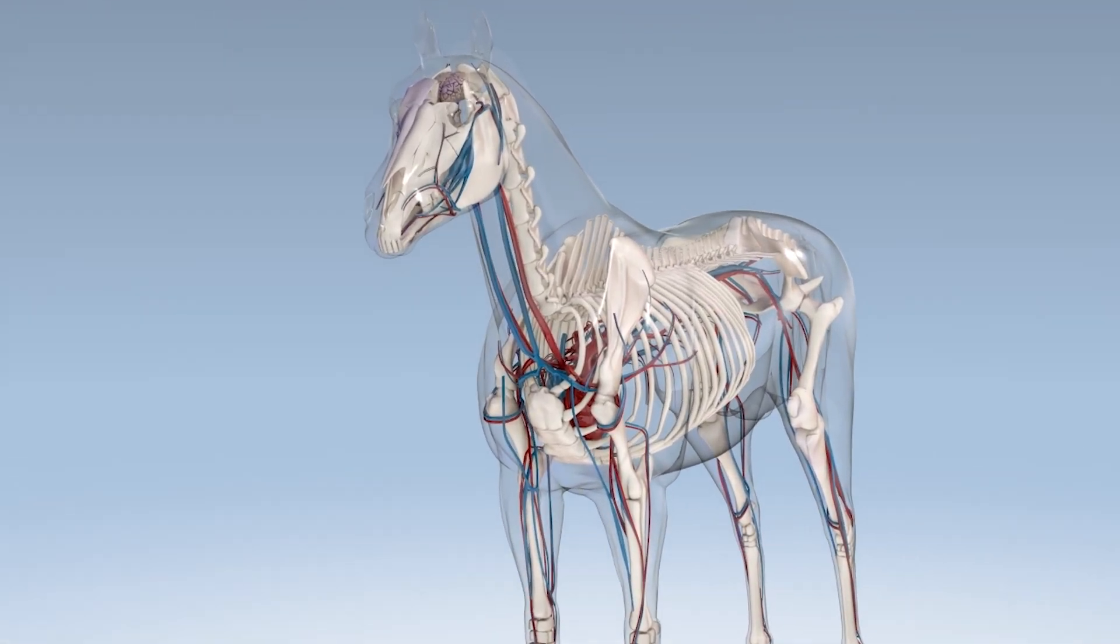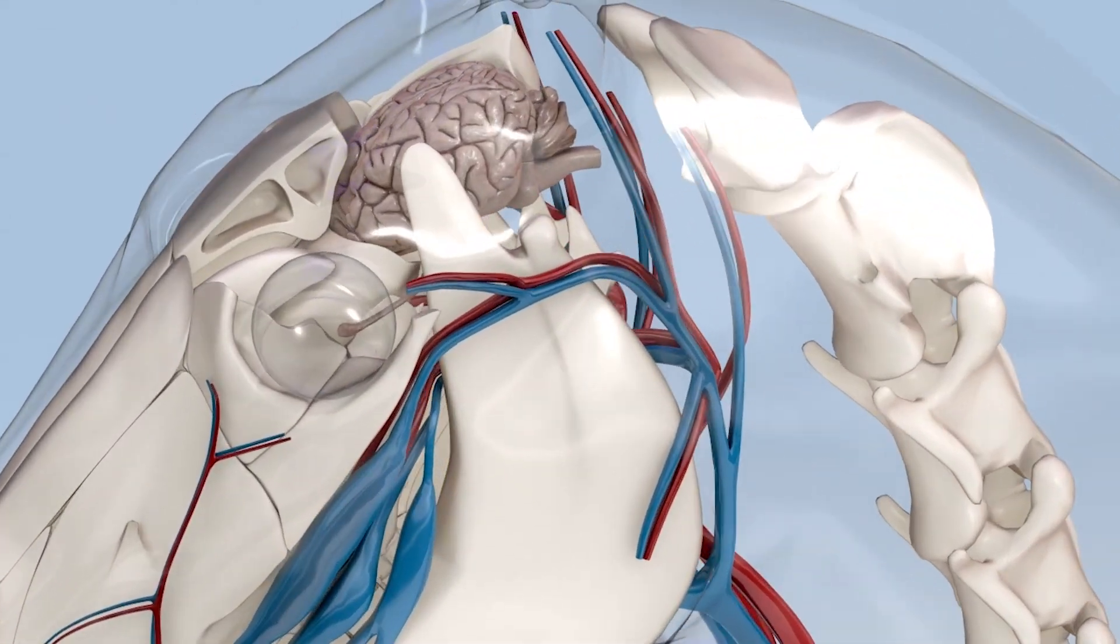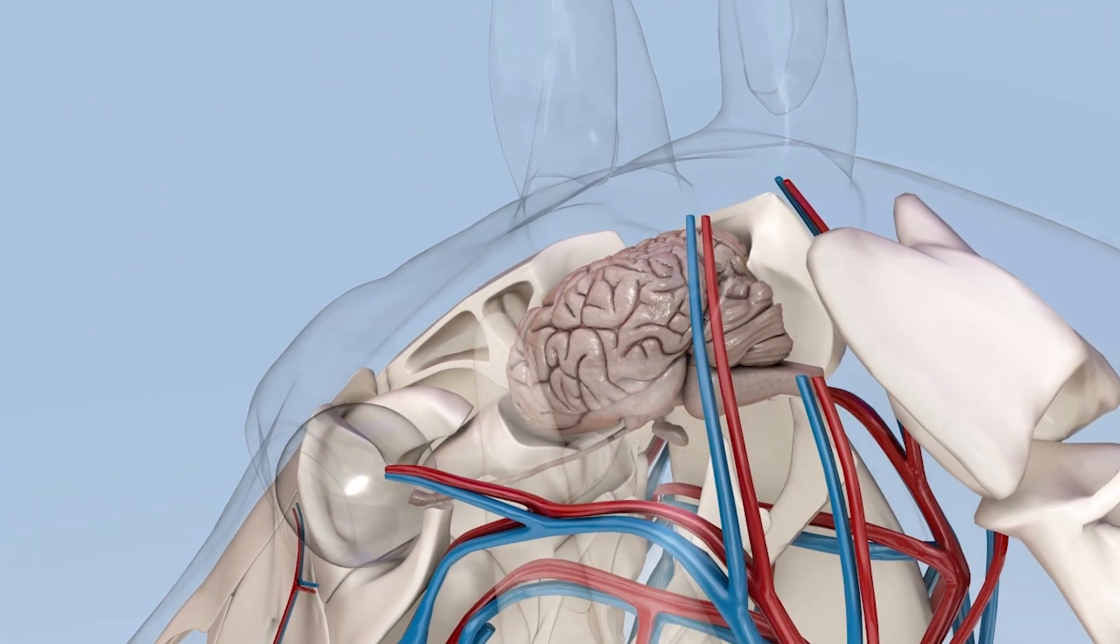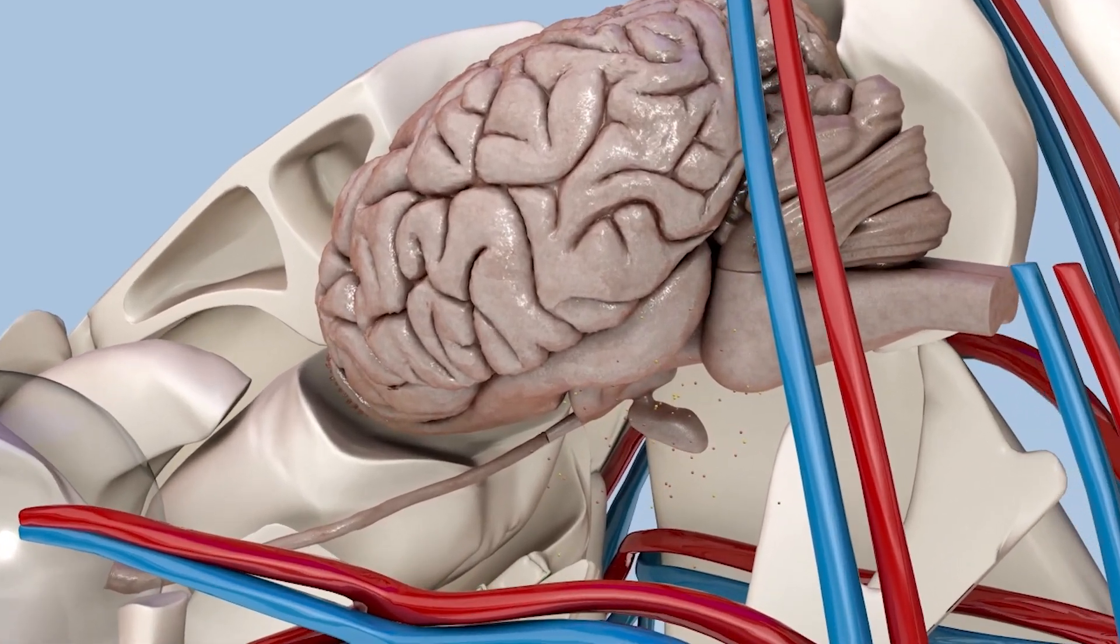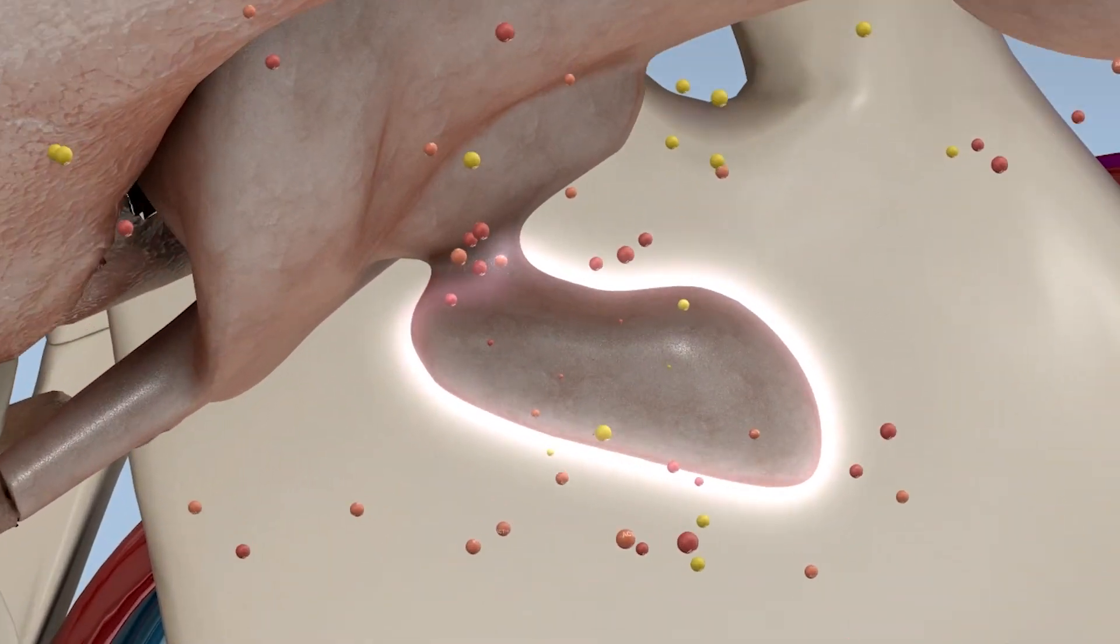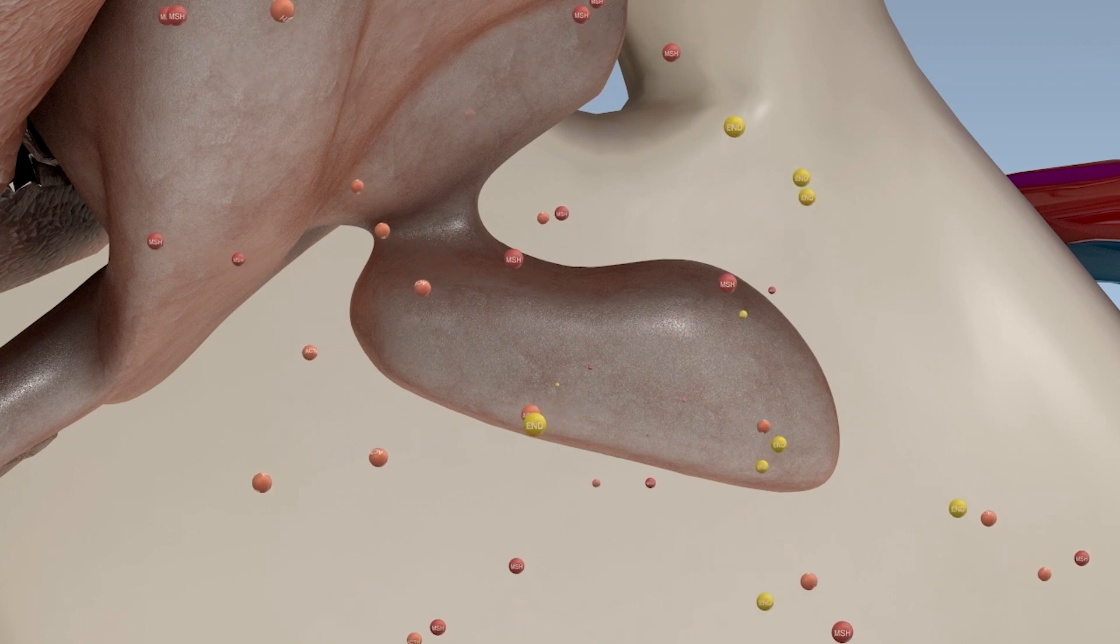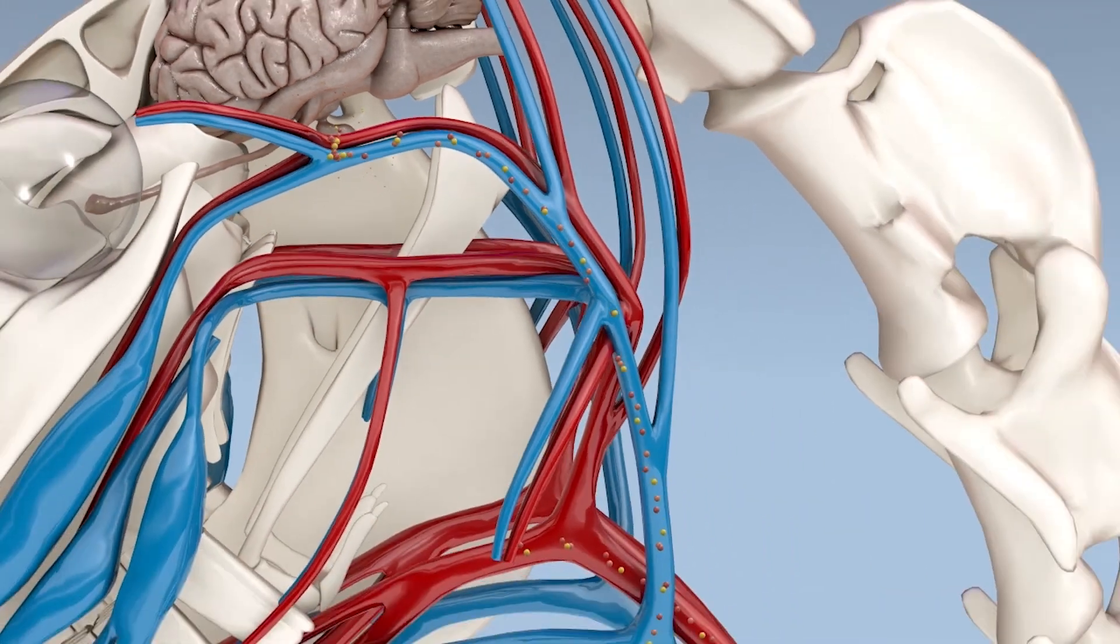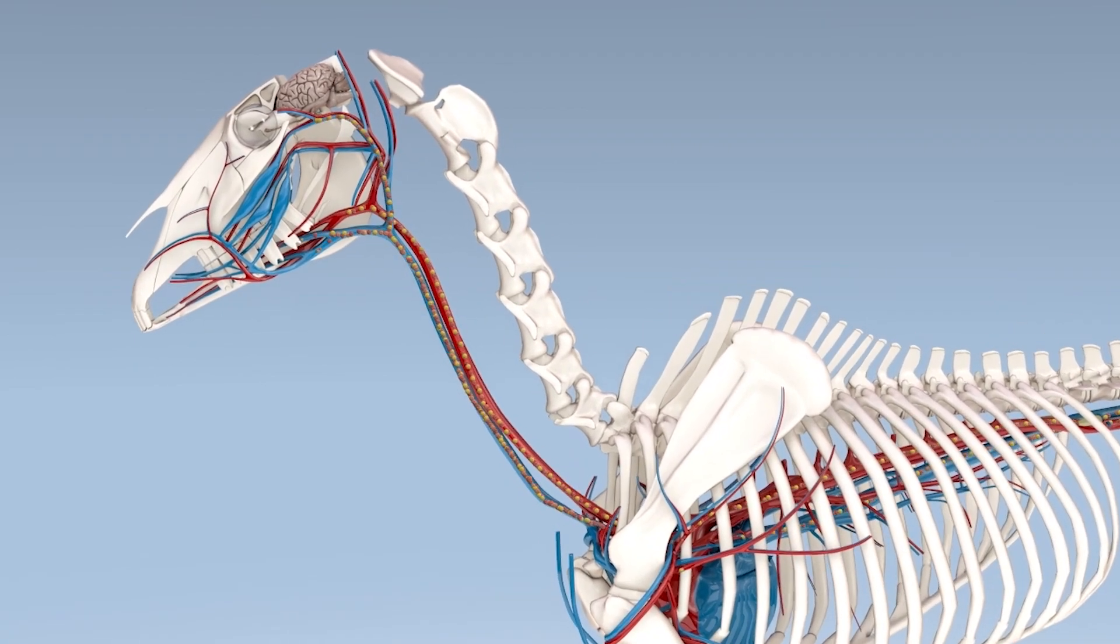To understand what causes PPID, it's necessary to understand how a healthy equine pituitary gland functions. The pituitary gland, known as the master gland, lies at the base of the brain. It is responsible for the production of an array of hormones. These hormones then circulate throughout the body where they regulate the function of various organs.